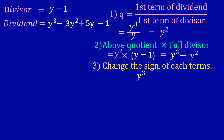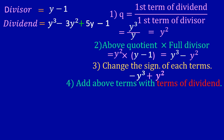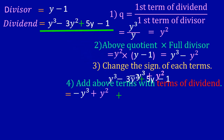Applying rule three, we change the sign: plus y³ becomes minus y³, and minus y² becomes plus y². So after changing the sign we have minus y³ plus y². For rule four, we add these terms to the dividend. The minus y³ cancels with plus y³ from the dividend.